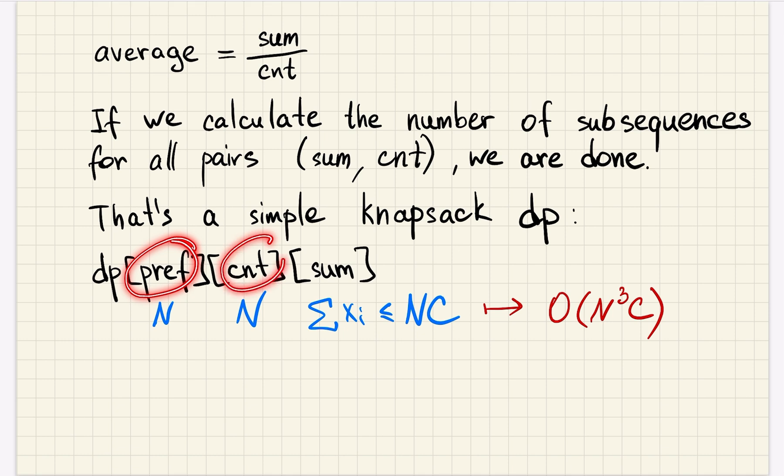This is up to N, this is up to N, and this is up to sum of all x_i, which is bounded by N times C, where C is the limit on the elements. So the solution works in N cubed times C and should pass without any issues, but we can do better.